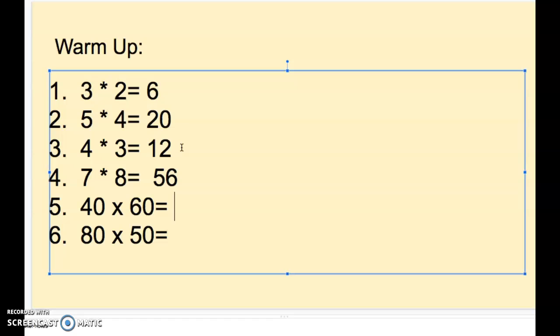40 times 60, 4 times 6 add two zeros would give me 2,400. And 80 times 50 or 8 times 5 add two zeros would give me 4,000. Nice work.